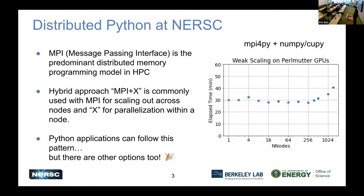I have to start off by mentioning that the predominant distributed programming model in HPC is really MPI — the Message Passing Interface. A lot of traditional HPC applications that take advantage of the full scale of HPC systems use MPI. Often there's a hybrid approach called MPI plus X, where you use MPI to scale out across nodes between different servers, and then use some other programming model to scale up or parallelize within a node — for example, MPI plus OpenMP is a very popular combination.